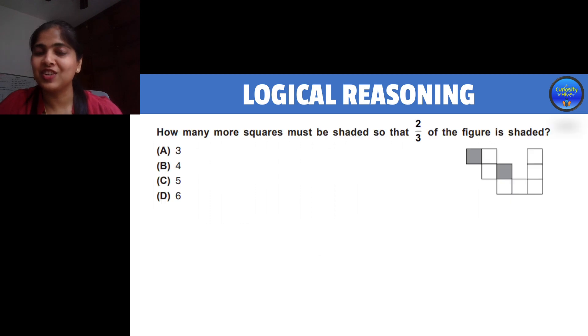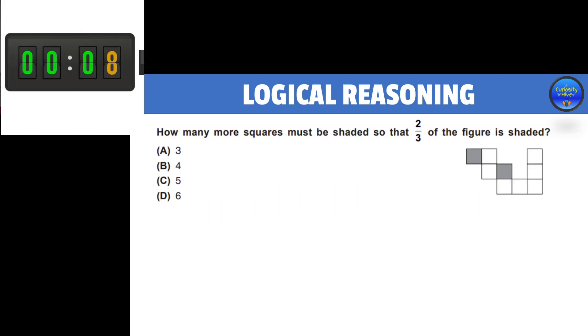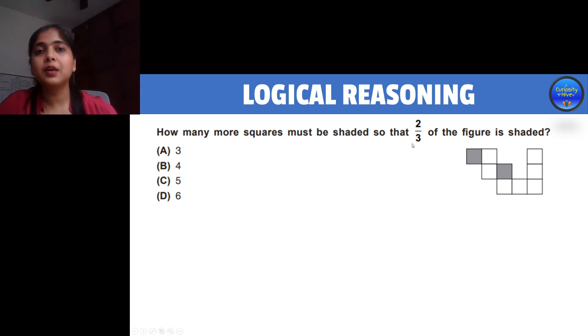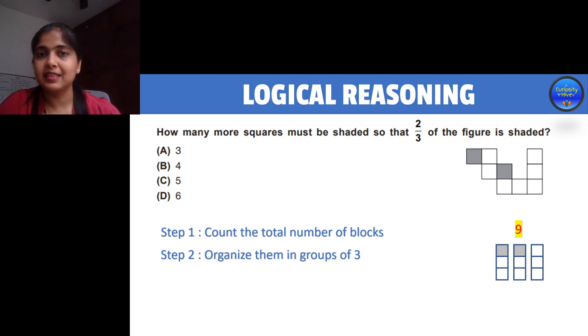Now get on for the next question. Here you need to find two-thirds of the figure and then find the number of blocks that need to be ticked to have two-thirds shaded. For this we have two simple steps. First, count the total number of blocks, which is nine. Second, arrange them in groups of three equal groups of three.